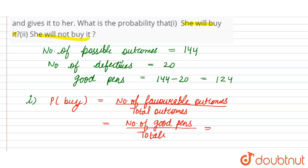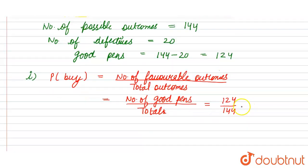Number of good pens are 124 and total number of pens are 144. So this is equal to, we can take the common factor 4, so 4 into 31 is 124 and 4 into 36 is 144. So the probability that Nuri will buy the pen is 31 by 36.